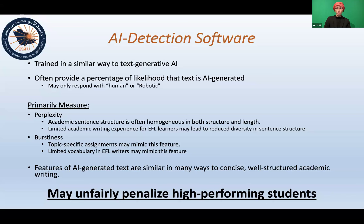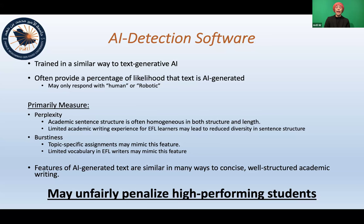Here is the issue: when writing academic papers, students often write sentence structure that is very formulaic — homogeneous in structure and length because it is of an academic structure itself; it is not creative. This is even more complicated when looking at English as a foreign language learners, because they may have reduced exposure to a diverse range of sentence structures and may have less confidence in their writing ability, making them more likely to stick to very simple sentence structures — which, again, is something that would be seen with AI-generated text.